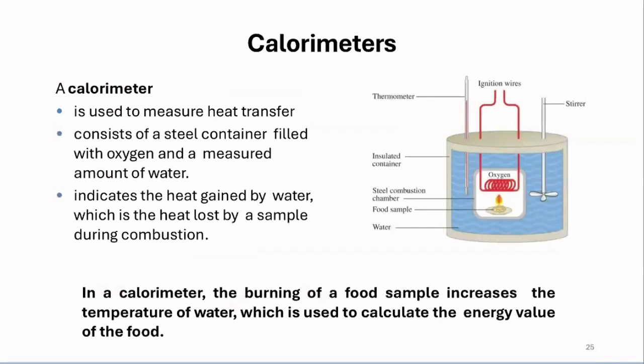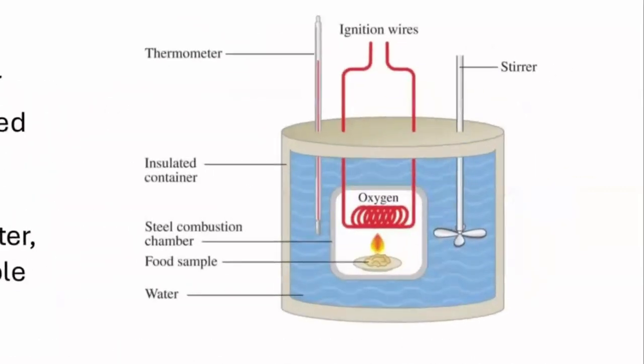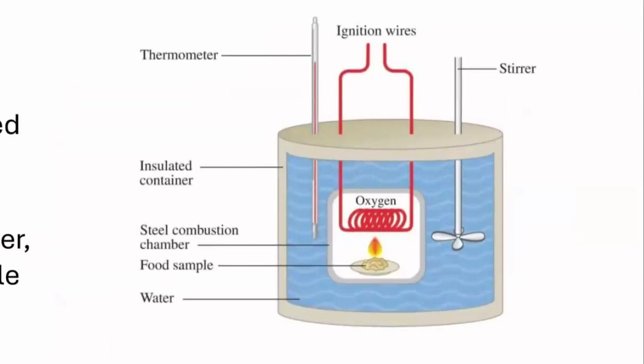When it comes to nutrition, calorimeters are the instruments that are utilized for us to see the nutritional calories in food. A calorimeter measures specifically heat transfer that is generated by a food sample. I'm going to explain how a calorimeter works by focusing on the image on the right side of the slide, which is a figure for specifically a calorimeter.